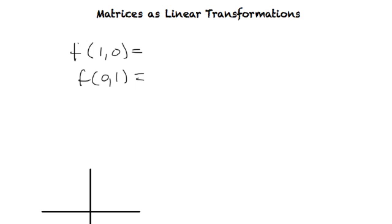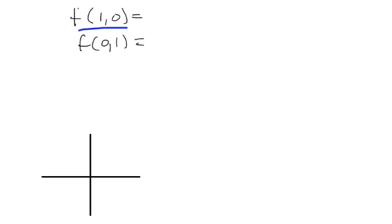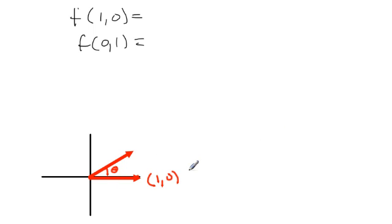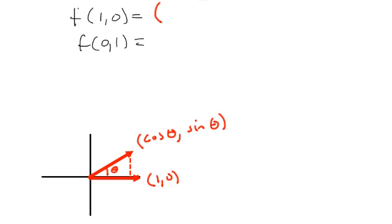First, take the vector [1, 0], which goes along the x-axis to 1. I want to rotate it by angle theta. Since the endpoint has coordinates (1, 0), the length of the vector is 1, and when rotated through angle theta it's still on the unit circle. So the coordinates are just the trig values: the x-coordinate is cosine theta and the y-coordinate is sine theta. So f([1, 0]) = (cos θ, sin θ).